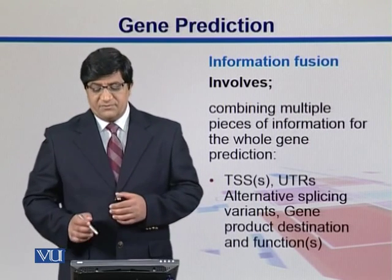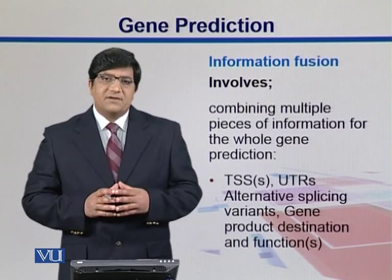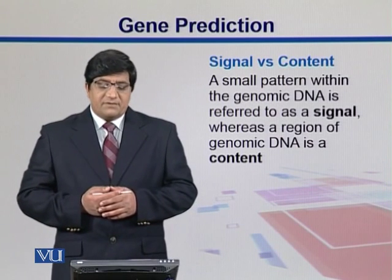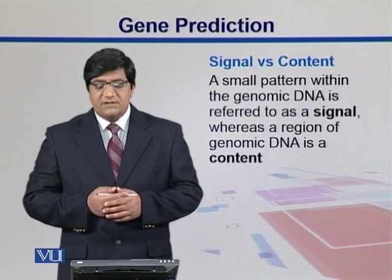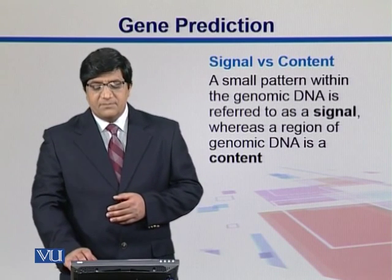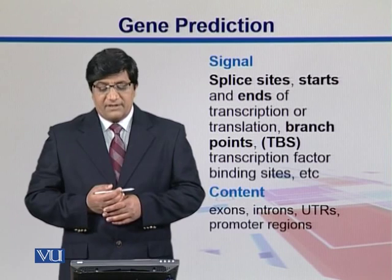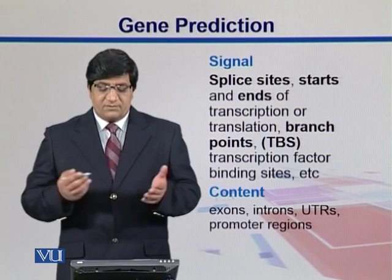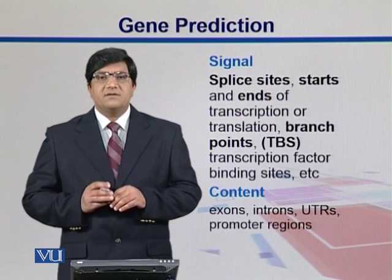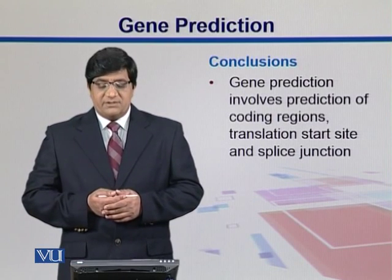Combining these pieces of information is called information fusion. We get different pieces of evidence by looking into different patterns, which we call signals, and these signals help us identify the genes. A signal is a small pattern within the DNA, whereas the whole region of genomic DNA is called the content. For example, splice sites, starts and ends of transcription or translation, and branch points are all signals. Contents may be the exons, introns, UTRs, and promoter regions. Promoter regions have specific patterns — that pattern is a signal, while the whole promoter is the content. Gene prediction involves prediction of coding regions, start sites, as well as splice junctions.